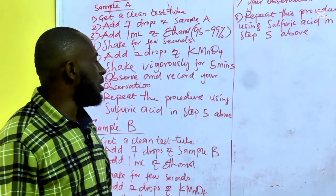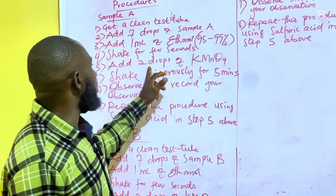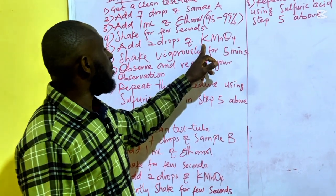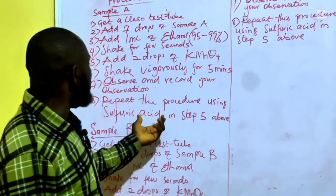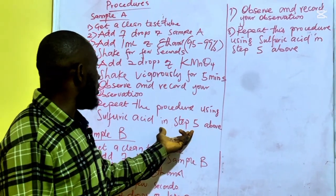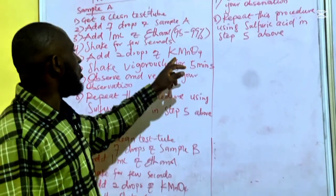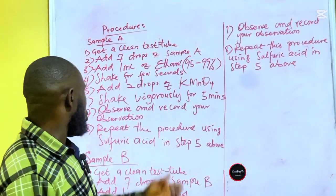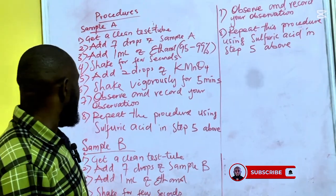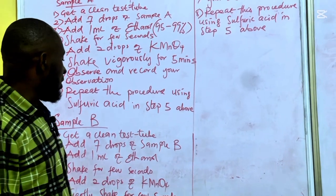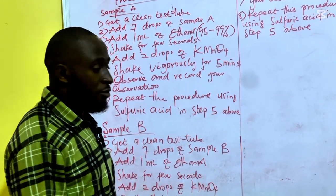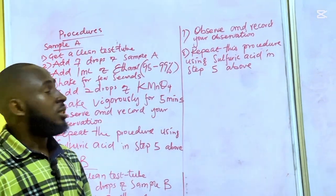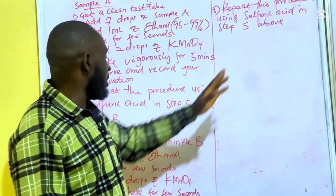Then repeat the procedure using sulfuric acid in step five — two drops. So in the next test tube, use sulfuric acid instead of permanganate. You have two test tubes: one for permanganate and one for sulfuric acid. Everything else remains the same — just change the reagent. For Sample B: get a clean test tube, add seven drops of Sample B, add 1 ml of ethanol, shake for three seconds, add two drops of permanganate, then observe and record your observation and inference. Repeat using sulfuric acid as well.